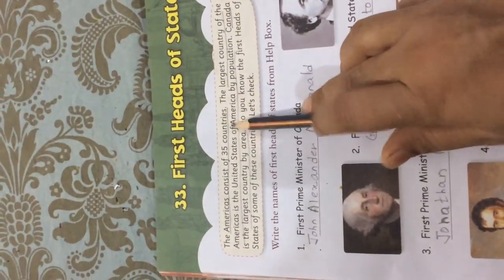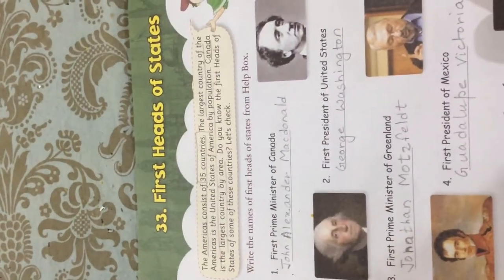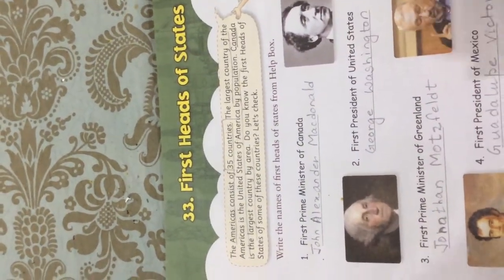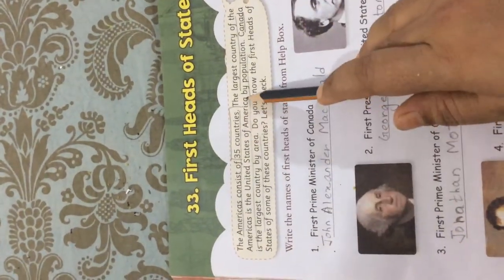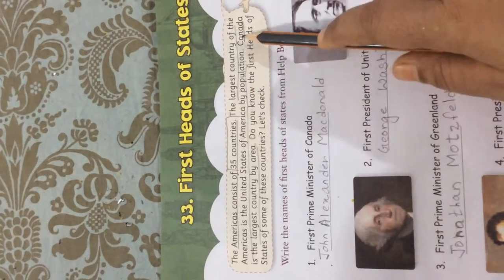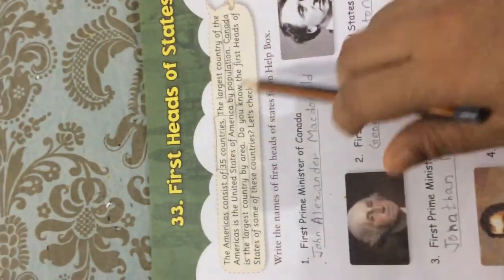The Americas consist of 35 countries. Whatever I am enclosing in a box is very important — you have to learn those points. Also, whatever I am underlining: the largest country of the Americas is the United States of America (USA) by population. Canada is the largest country by area. So you have to learn and underline these points in your book.